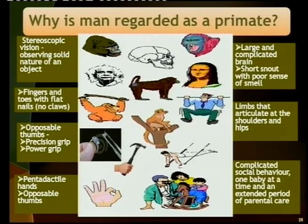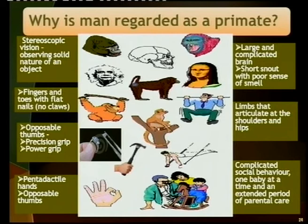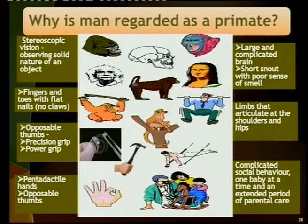We also have large and complex brains. We have a short snout with a poor sense of smell — we don't look like our dogs with their long snouts and acute sense of smell. We can smell, but we won't be able to detect everything that they can. The short snout is important and I'm putting emphasis on this because when we do comparisons, we'll talk about that again.